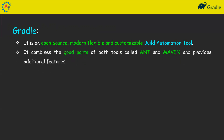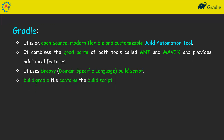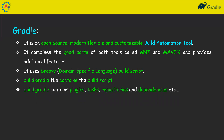Gradle combines the good parts of both Ant and Maven and provides additional features. Ant and Maven are also build automation tools, and Gradle was created as a combination of both with extra features. It uses a Groovy build script — the build script is written in a Groovy Domain Specific Language in a file called build.gradle. This file contains the build script, including plugins, tasks, repositories, and dependencies.